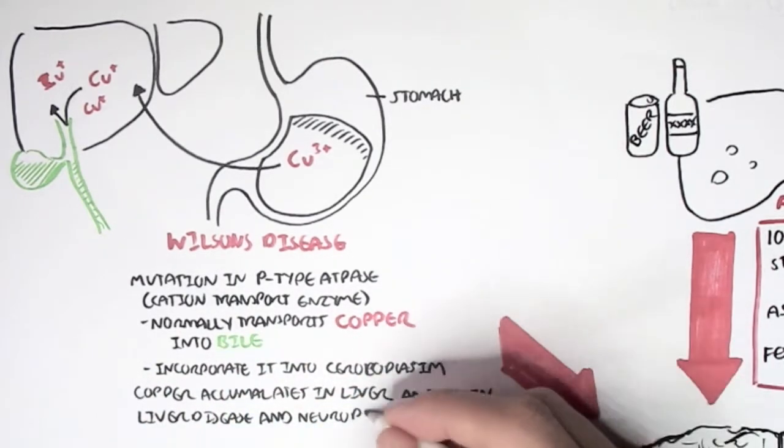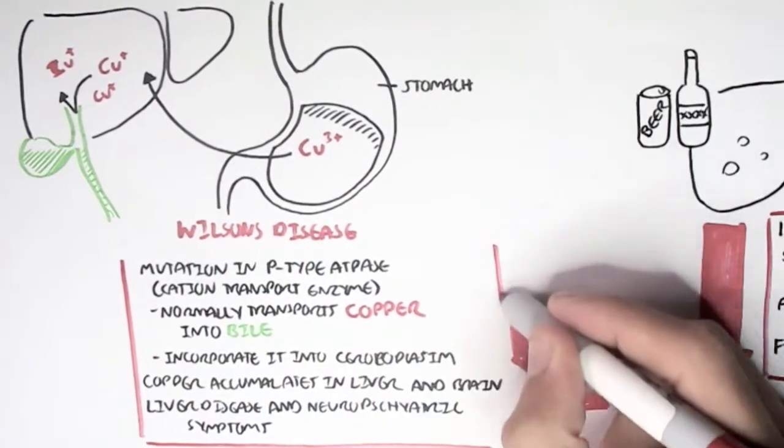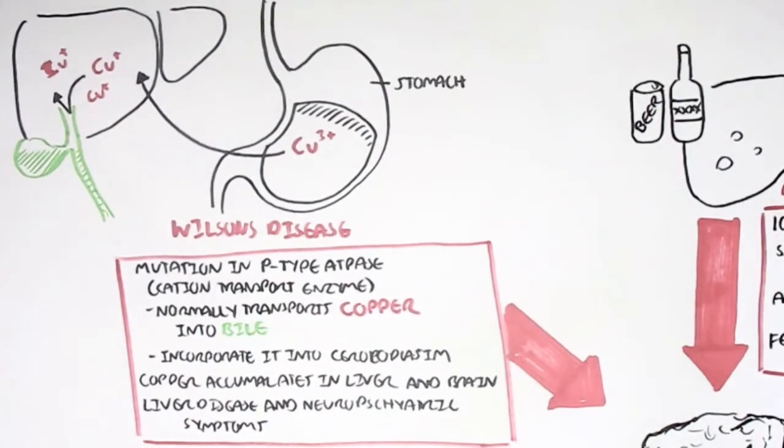Altogether, Wilson's disease can cause liver disease and neuropsychiatric symptoms. Problems with copper accumulating in tissues such as the liver can cause liver cirrhosis.